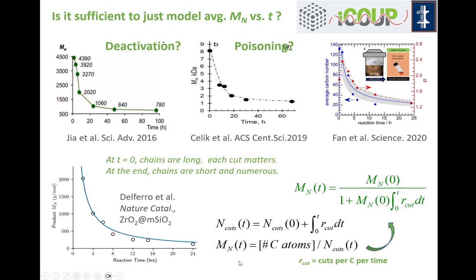How can we quantify that idea? The average molecular weight is defined by the total number of segments divided by the number of chains — which is basically the initial number of chains plus an integral over the cutting rate. If you combine these two things, you get an average molecular weight that evolves in time starting from the initial molecular weight, divided by a factor that grows in proportion to time. This always gives you a curve that looks like the one seen in the experiments.